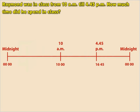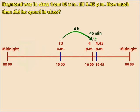To make the time easier to find, we can split the time markings in terms of hours and then minutes. For example, it is easier to find the time taken from 10 a.m. to 4 p.m., which is 6 hours, and add it to the time taken from 4 p.m. to 4:45 p.m., which is an additional 45 minutes. Hence, the time Raymond spent in class was 6 hours and 45 minutes.